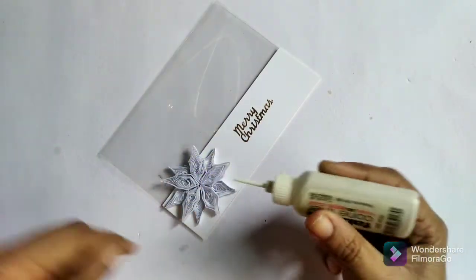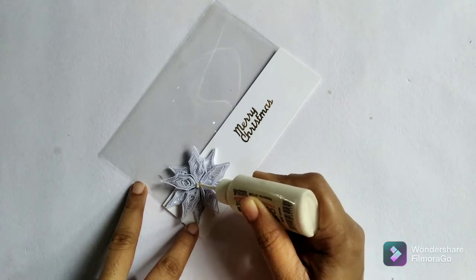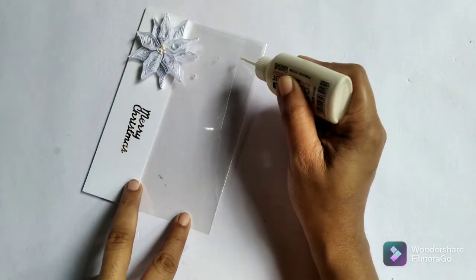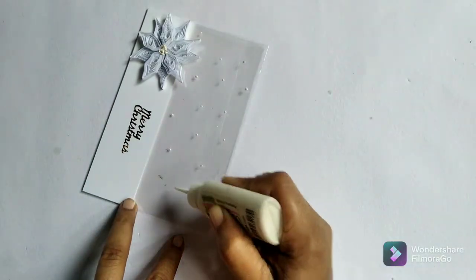Now I use some 3D outliner, this is pearl color, for the pollens of the flower. I also add random dots over the acetate to make it look even more better.